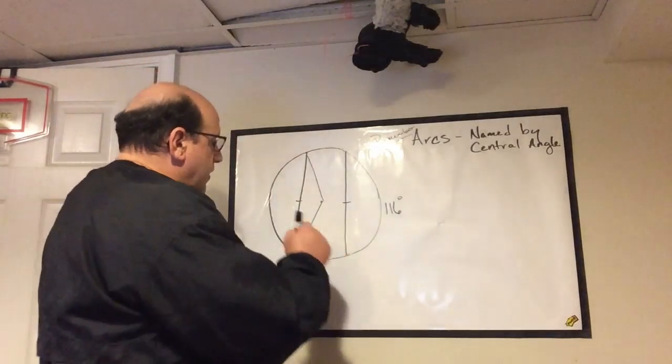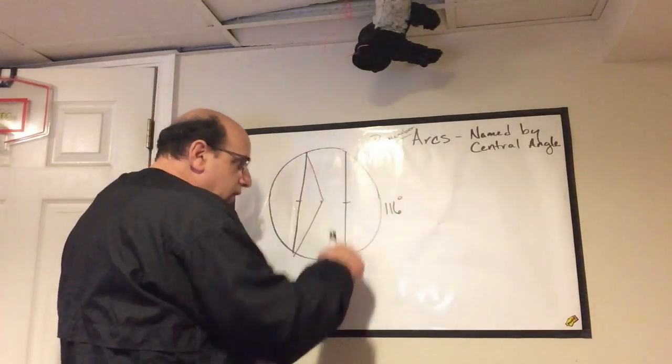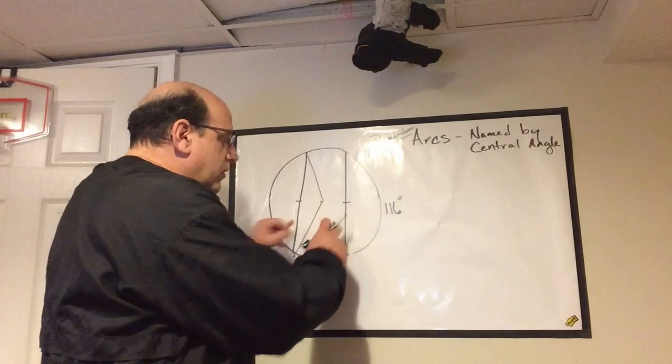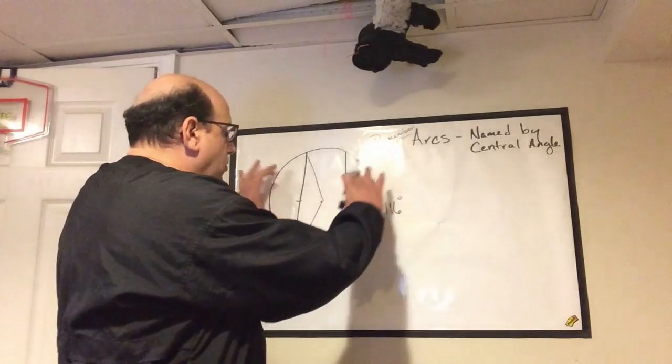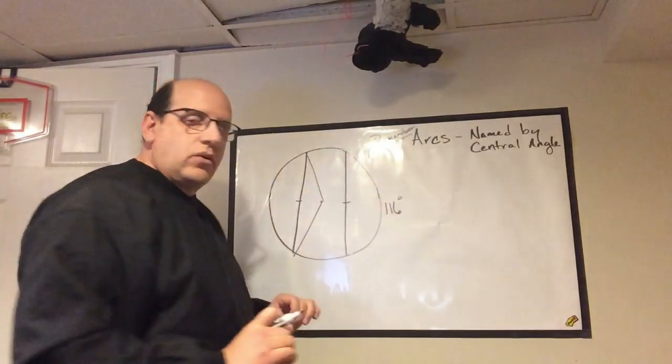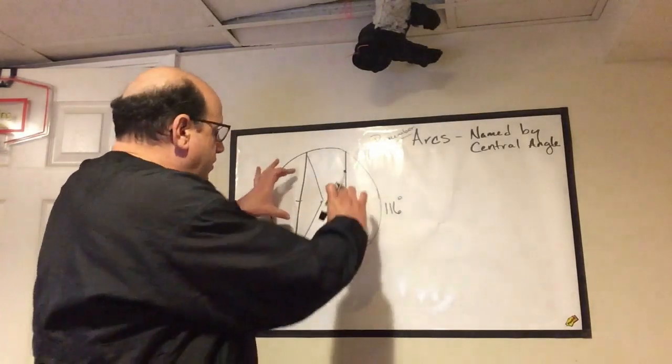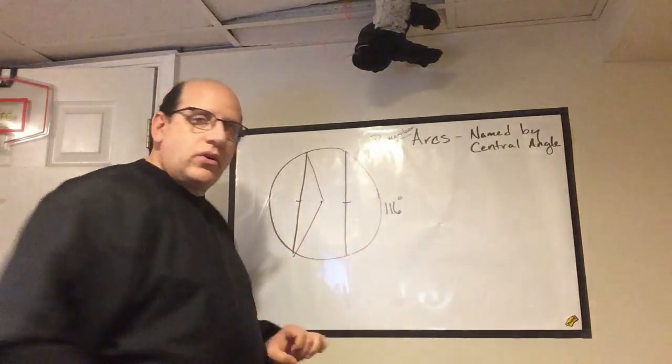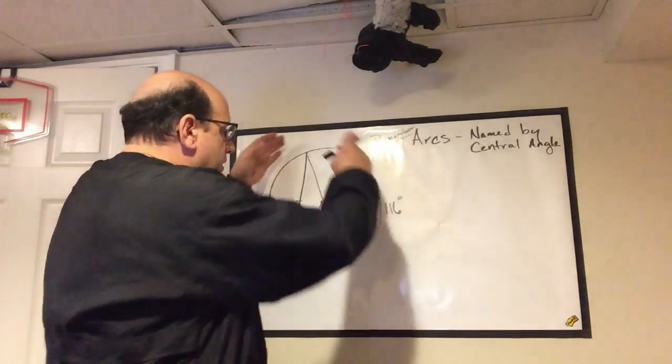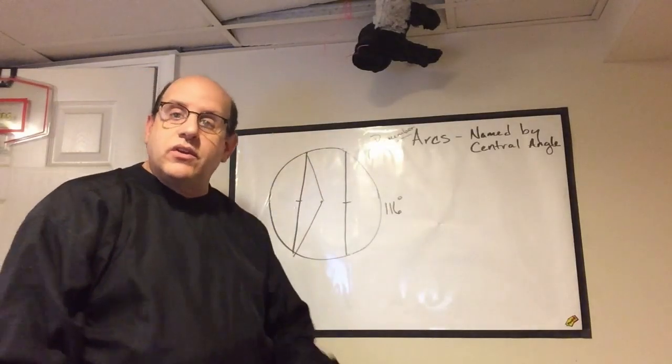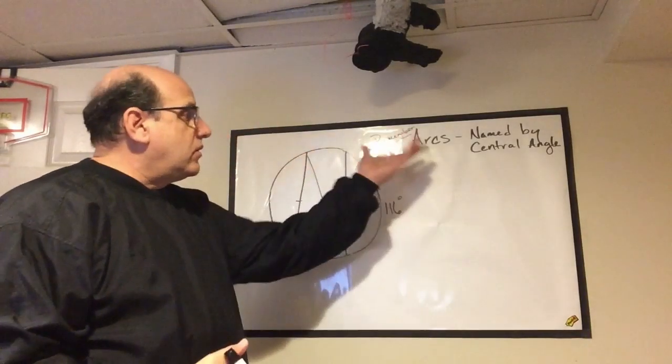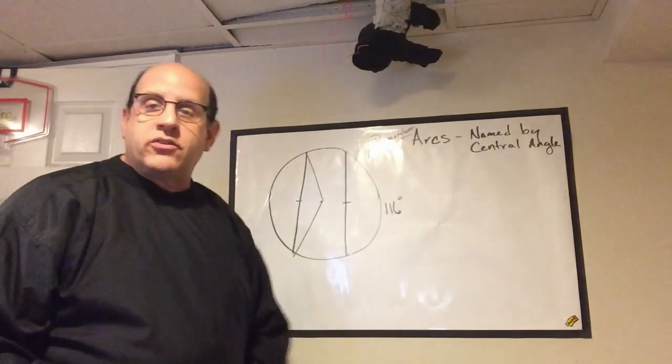If this chord is congruent to this chord, we know that congruent chords create congruent arcs. Therefore, if this arc is 116 degrees, then this arc is also 116 degrees. And remember, arcs are named by their central angle.